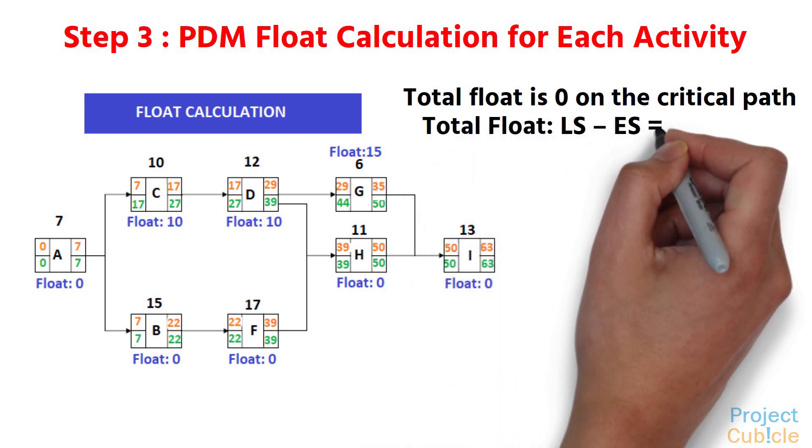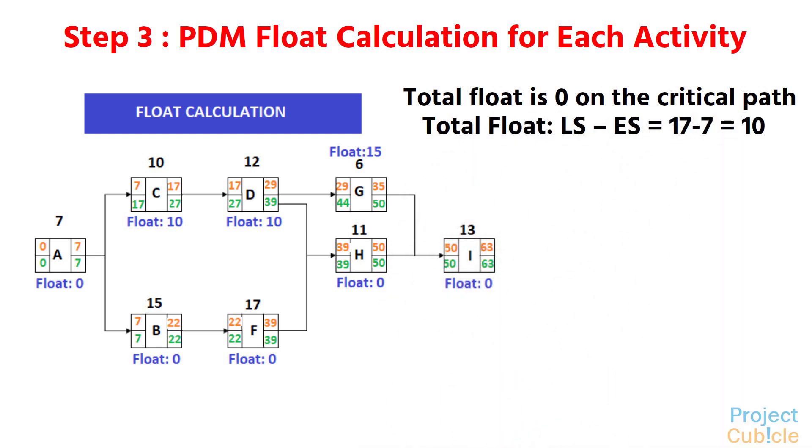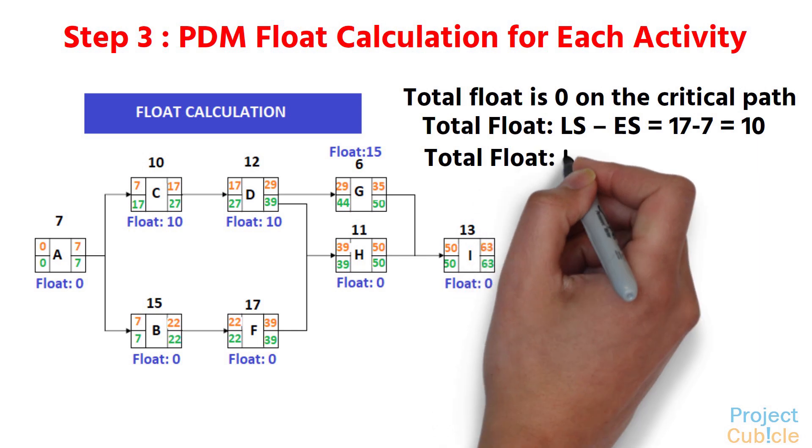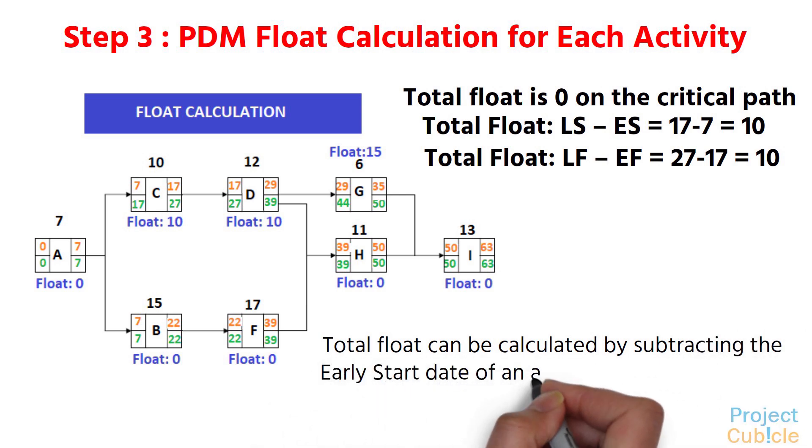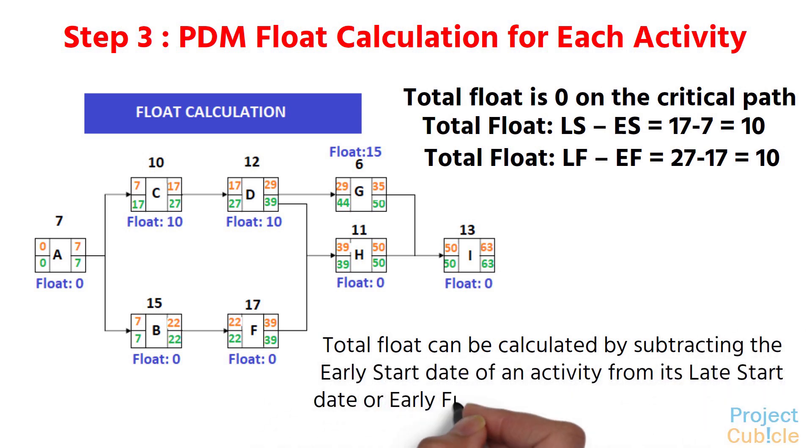Total Float: LS minus ES equals 17 minus 7, which is equal to 10. Total Float: LF minus EF equals 27 minus 17, which is equal to 10. Total Float can be calculated by subtracting the early start date of an activity from its late start date, or early finish date from its late finish date.